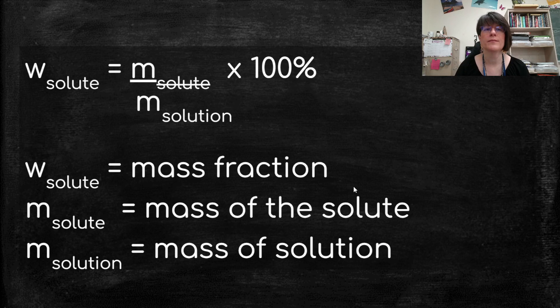So the formula is W_solute stands for mass fraction. M of the solute is the mass of the solute, and M_solution is the mass of the solution, and then we multiply it by 100, or it would be a percent. Now, this is a limitation of the program here. Solute should not be crossed out. This is just a division sign here showing that we divide the mass of the solute by the mass of the solution and multiply by 100%.